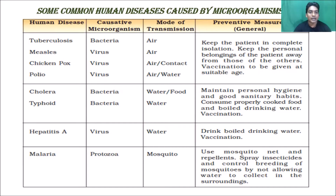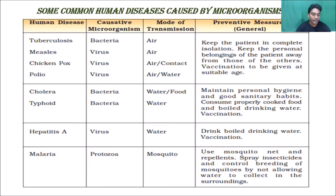Coming to tuberculosis, also called TB, it is caused by bacteria and the mode of transmission is by air. As mentioned in previous classes, pathogens can enter through food, water, air, or physical contact. Measles, which is caused by a virus, is also transmitted by air.